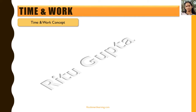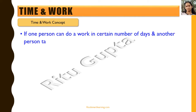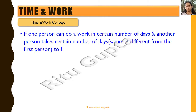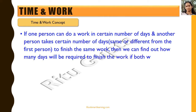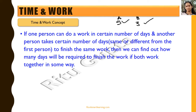Let's look at the concept related to time and work. Say we have two persons — one person A can do a certain task in 5 days, and another person B can finish the same task in 3 days. If we want both A and B working together on the same task, we can find out how much time would be required to finish the work.